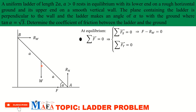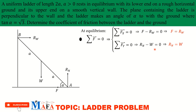Considering all forces to the left as positive and to the right as negative, the sum of horizontal forces gives F minus R_w equals zero. For vertical forces, taking upward as positive: R_n minus W equals zero. From these two equations we get F = R_w and R_n = W.